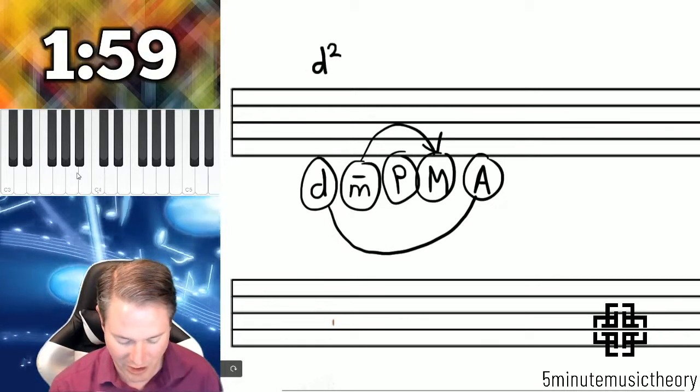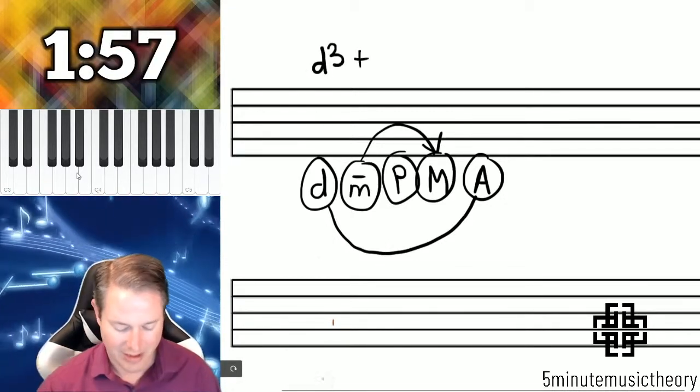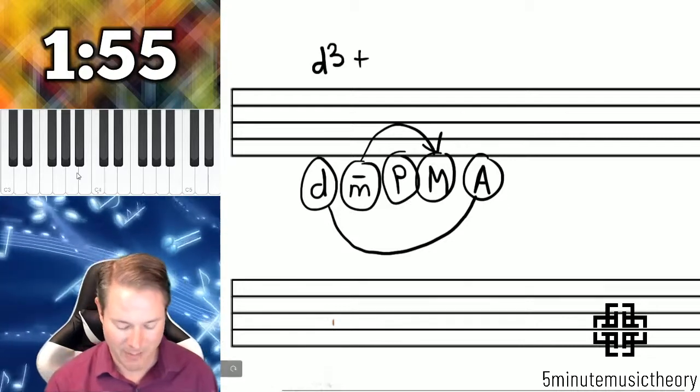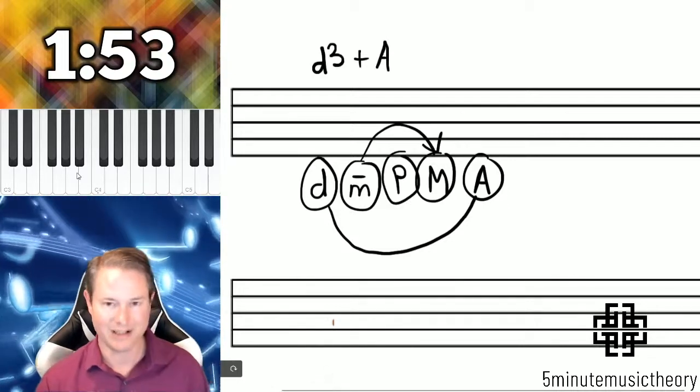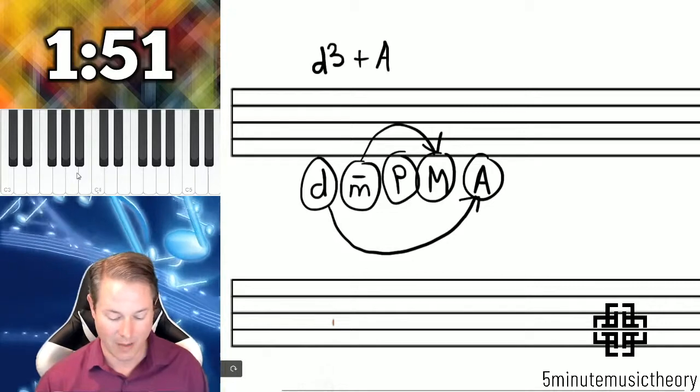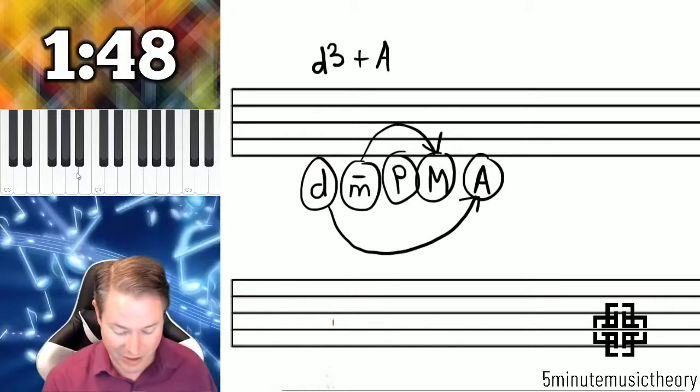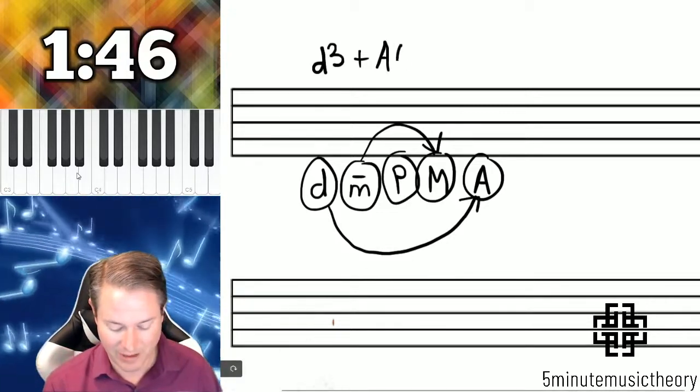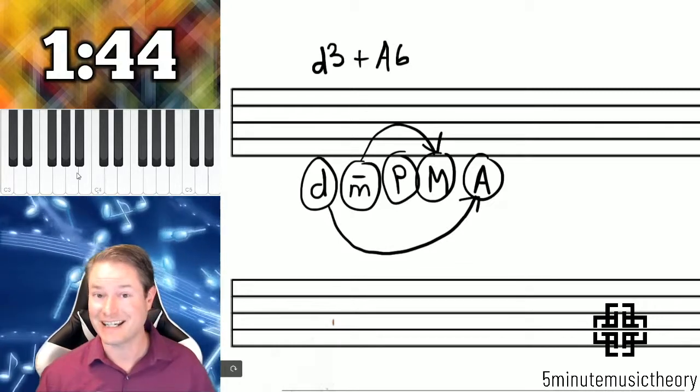Let's do a diminished interval this time. A diminished third, and then we need to find the opposite quality, which is augmented. Diminished to augmented is opposite, and the opposite is true as well, augmented to diminished. And then nine minus three is six. It's really as easy as that.